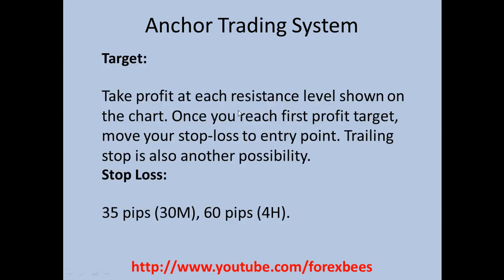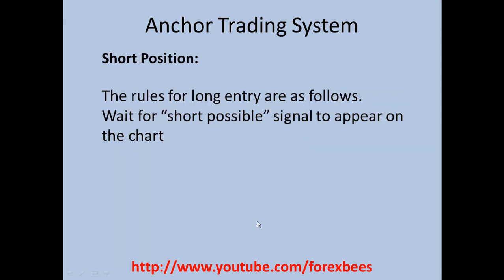The target is to take profit at each resistance level shown on the chart. Once you reach the first profit target, move your stop loss to the entry point. A trailing stop is also another possibility. The stop loss is 35 pips for a 30-minute chart and 60 pips for a 4-hour chart.